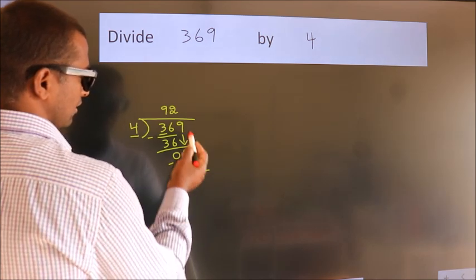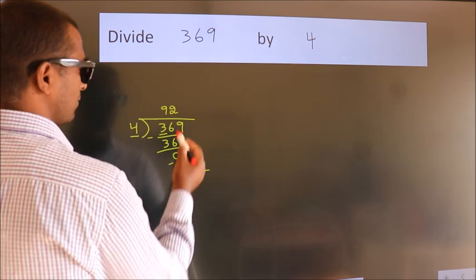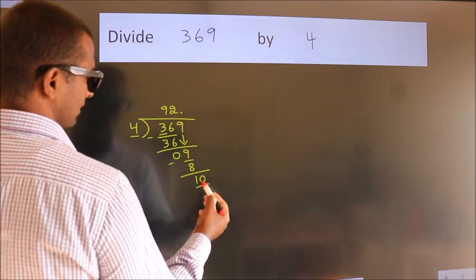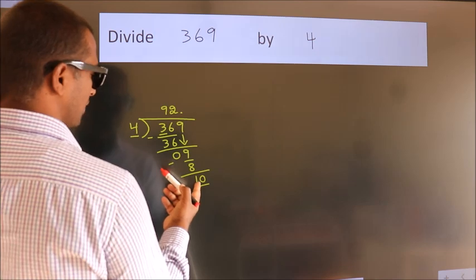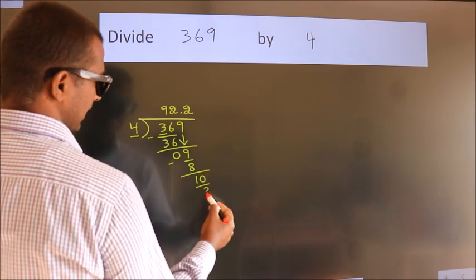After this, no more numbers to bring it down. So what we do is, we put a dot, take 0. So 10. A number close to 10 in the 4 table is 4 twos, 8.